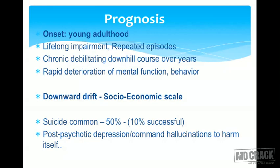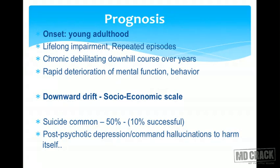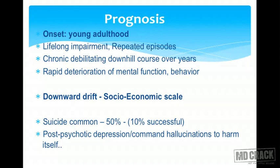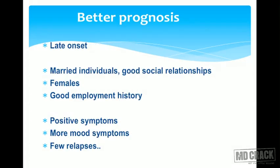Schizophrenia typically begins in young adulthood and leads to lifelong impairment with repeated episodes and a chronic, debilitating downhill course with rapid deterioration of mental function and behavior. There is a downward drift across the socioeconomic scale. Suicide attempts occur in approximately 50% of patients, and 10% may be successful. Post-psychotic depression and command hallucinations to harm oneself may also be seen.